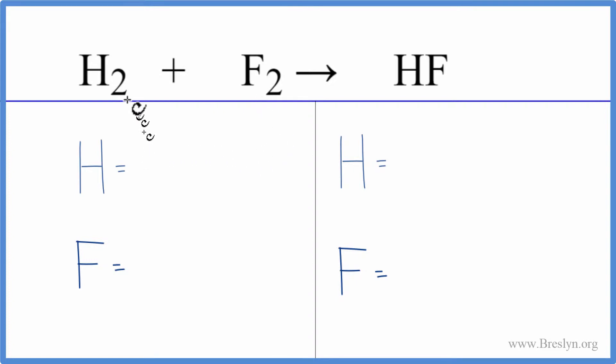To balance it let's count the atoms up. We have two hydrogen atoms, we have two fluorine atoms. On the product side we have one hydrogen and we have one fluorine.